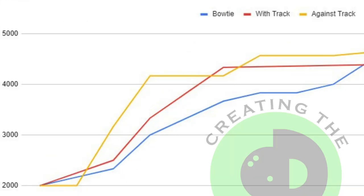This is where the data gets pretty interesting. The bowling ball sanded against the track was again the fastest to make the 1,000-point grit jump to 4,000 grit. The with-the-track bowling ball was second fastest. The bowling ball sanded around the bowtie didn't reach 4,000 grit until 2.5 games after the against-the-track ball did, while the with-the-track ball was a game and a half faster to get to 4,000 grit.